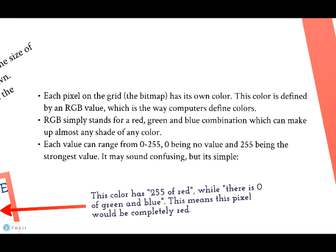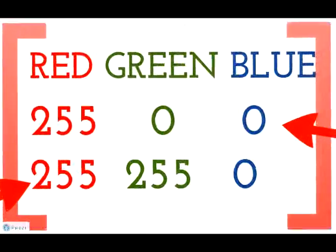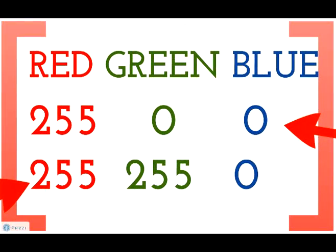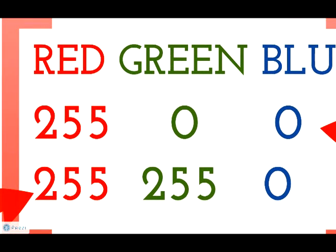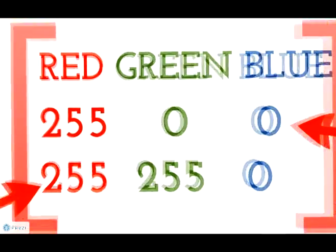Each pixel on the grid — the bitmap — has its own colour. The colour is defined by an RGB value, which is the way computers define colours. RGB simply stands for red, green and blue combination, which can make up almost any shade of any colour. Each value can range from 0 to 255, 0 being no value and 255 being the strongest value. Here are two pixels with two different RGB values. The first value has 255 of red, 0 of green and 0 of blue.